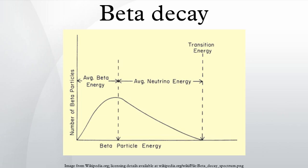Radioactivity was discovered in 1896 by Henri Becquerel in uranium, and subsequently observed by Marie and Pierre Curie in thorium and in the new elements polonium and radium. In 1899 Ernest Rutherford separated radioactive emissions into two types, alpha and beta, based on penetration of objects and ability to cause ionization. Alpha rays could be stopped by thin sheets of paper or aluminum, whereas beta rays could penetrate several millimeters of aluminum. In 1900 Becquerel measured the mass-to-charge ratio for beta particles by the method of J.J. Thomson used to study cathode rays and identify the electron. He found that m/e for a beta particle is the same as for Thomson's electron, and therefore suggested that the beta particle is in fact an electron.